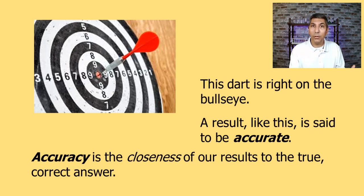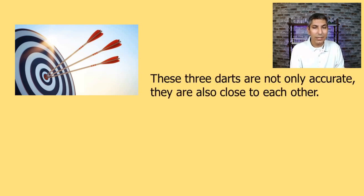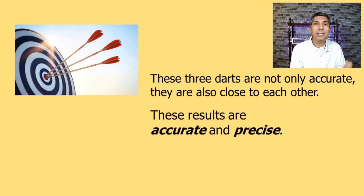Now let's take a look at another way we can describe our results. Here we have an archer and they have shot three arrows right into the bullseye. The fact that we have three arrows that are very close to each other in the correct place tells us that they're not only accurate, they're also close to each other. The fact that these results are consistent or close to each other is called precise.